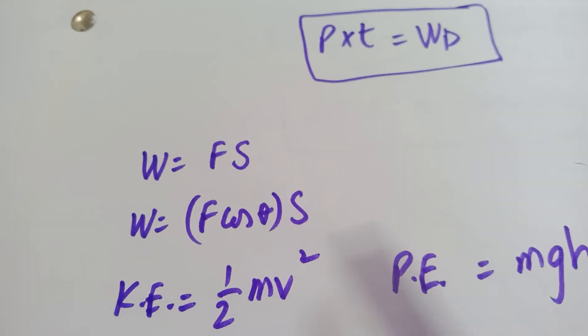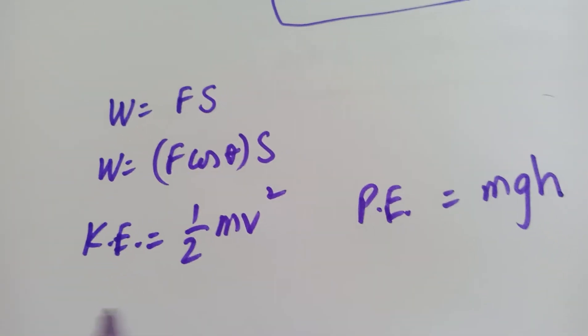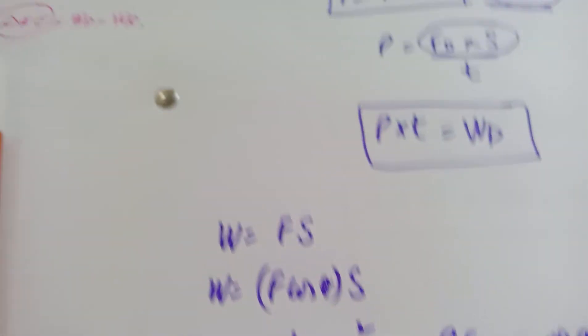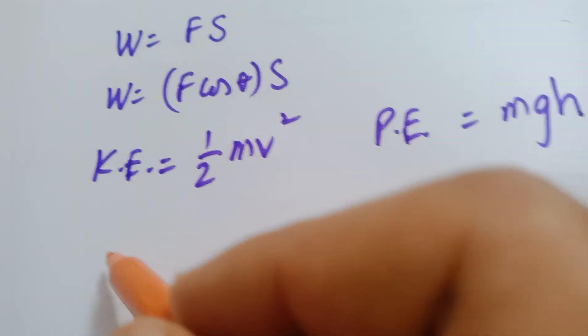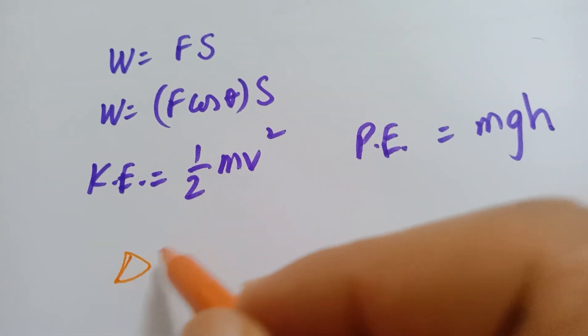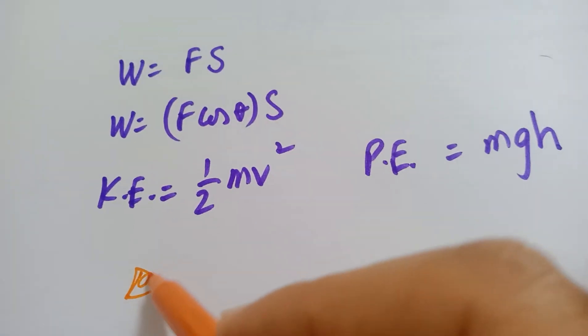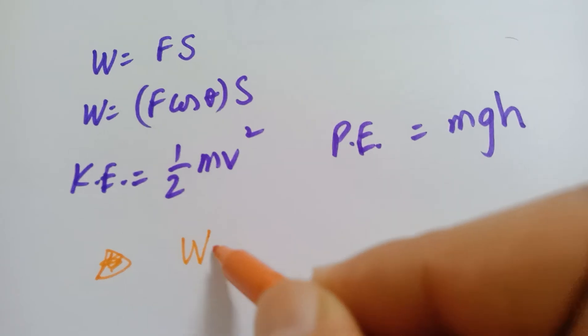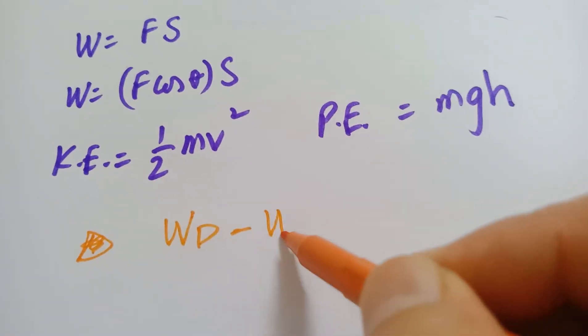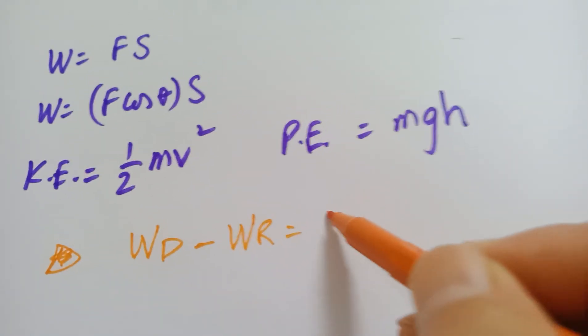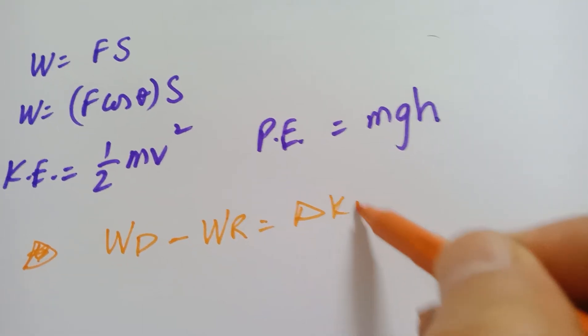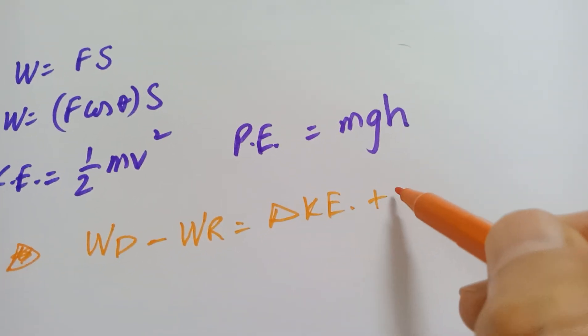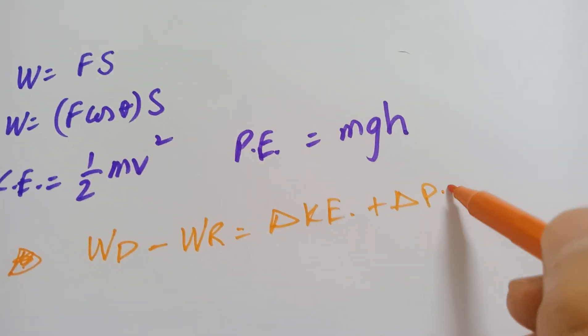Then there is the most important formula, the golden formula: the work done by the driving force minus work done by the resisting force that is equal to change in kinetic energy plus change in potential energy.